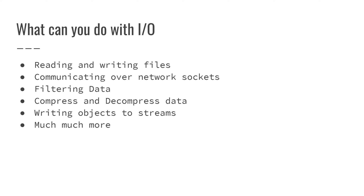You can communicate over network sockets, which is something even more advanced that we're going to talk about. You can also filter data, compress and decompress data for zip files and stuff like that. And we can write objects to streams, which is called serialization. We're going to cover much more than that actually, but those are some of the few things you might be anticipating. The most popular one is going to be reading and writing to files, which is what we're going to start off with.